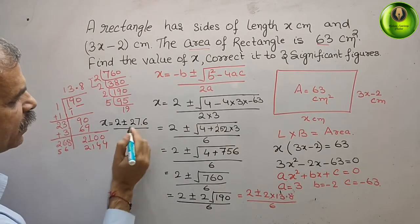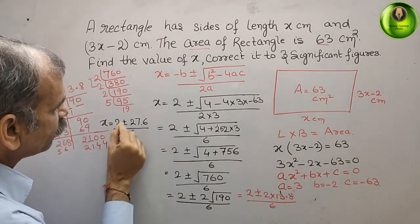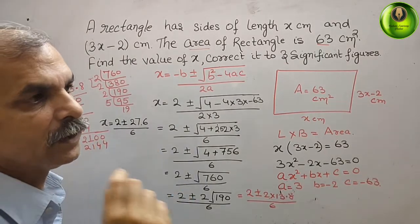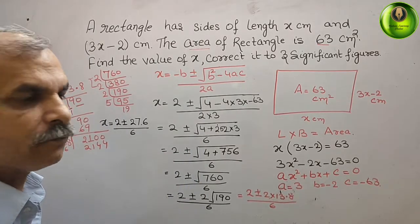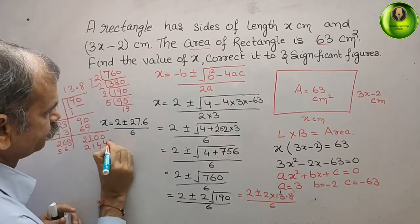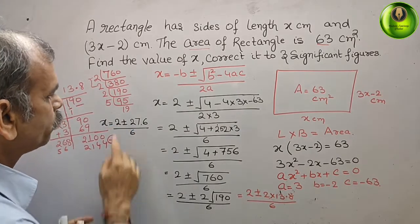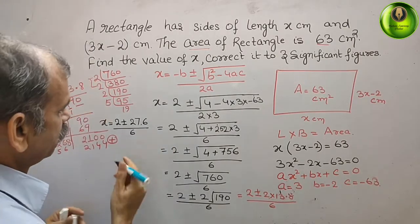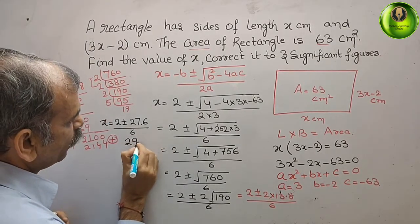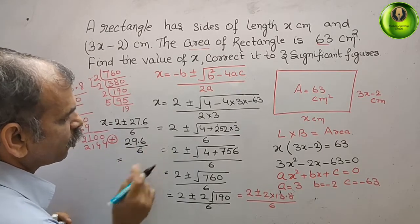Now, we can. What we have to do? Just to, we have to take one thing. That, either we have to take a positive or a negative. So, first we will take a positive. So, what we will get? 2 plus 27.6. That means, 29.6. 29.6 by 6. Now, solve this.